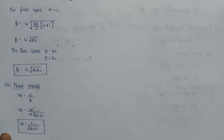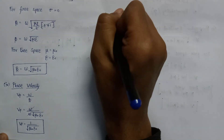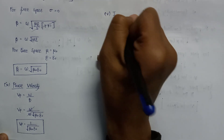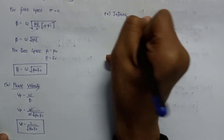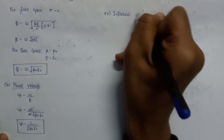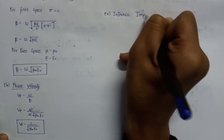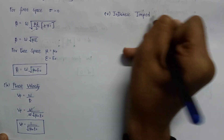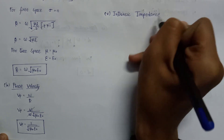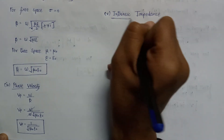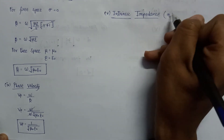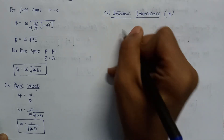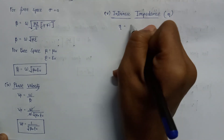Now let us have a look at the fifth factor, which is intrinsic impedance. The intrinsic impedance is denoted by eta, and its value is given by the square root of j·omega·mu divided by (sigma + j·omega·epsilon).